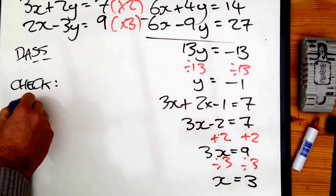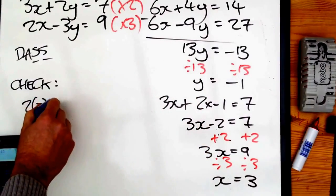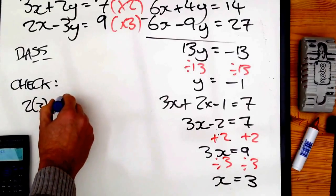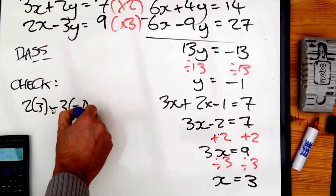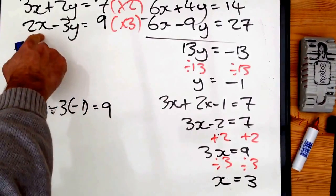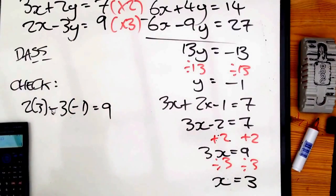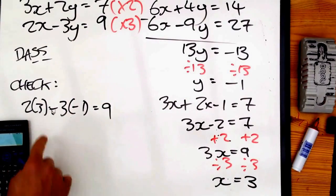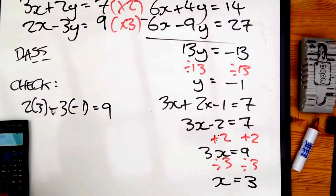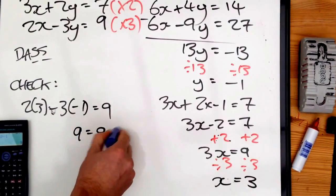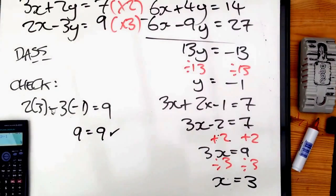I end up with two times three minus three times minus one is equal to nine. So x is three and y is minus one in there. Work it out — again, if you want to, stick the numbers in your calculator. Two times three minus three times minus one equals nine. So you get nine is equal to nine. Brilliant — our solution works.